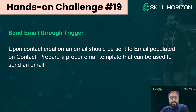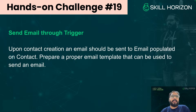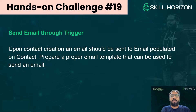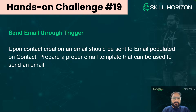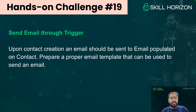Moving forward, today's challenge is focused on the email thing. You might have used Flow and through Flow we can send an email, but we can also send emails via triggers. If you are creating a record and on that record you have an email field populated, we can use that email field in the trigger to send an email. For example, when creating a contact with an email field, we will be able to send an email to that contact.